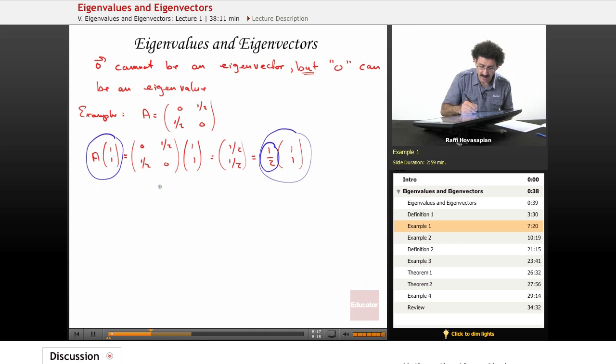My eigenvalue lambda equals 1/2, because that's all A did—it simply by virtue of this multiplication just shrank it by a half. Lambda equals 1/2, and the vector [1, 1] happens to be one of the eigenvectors.